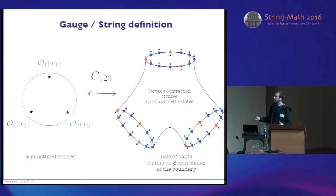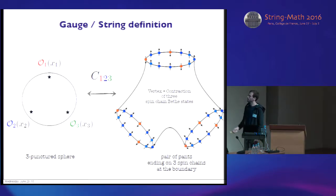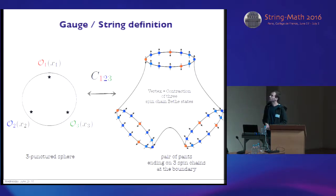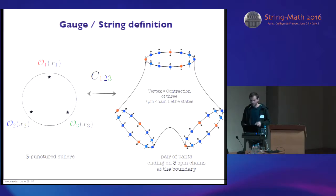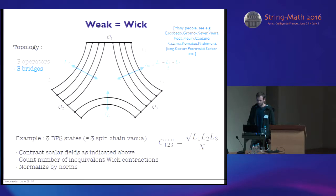So what about three-point functions? In the case of three-point functions, we are interested in merging, as I said before, free spin chains at a particular vertex. So we want to contract them in a particular way — contract this spin chain state and get a number out of it. That's what we are interested in.